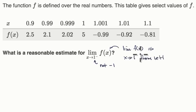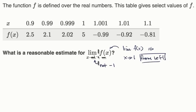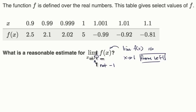From the left. How do we know that? That's what that little negative tells us. It tells us we're approaching one from values less than one. If we were approaching one from the right, from values greater than one, that would be a positive sign right over there.